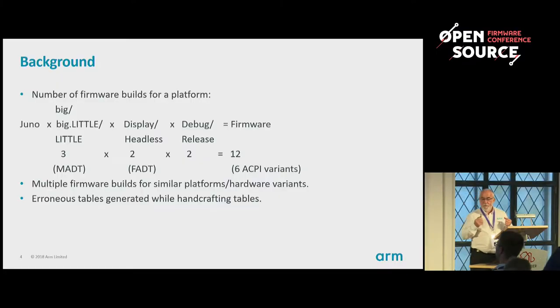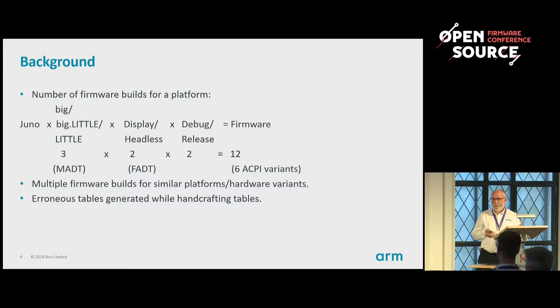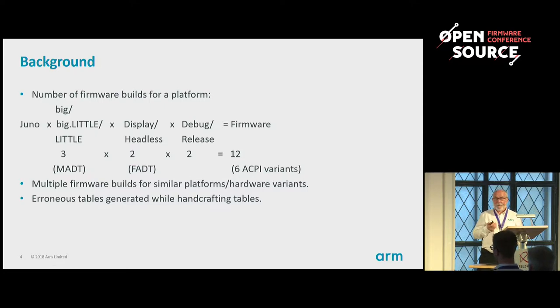We put a lot of effort into the firmware, and I think we should reduce that. If we take just a single ARM platform, we found we were producing a lot of versions of firmware. We have this big-little setup, but for various reasons we wanted firmware builds that only use the big, or only use the little. It meant we had a lot of variants on the ACPI tables — minor changes, but the minor changes you have to maintain and test, and it can be difficult to get right. So we found it was expensive.